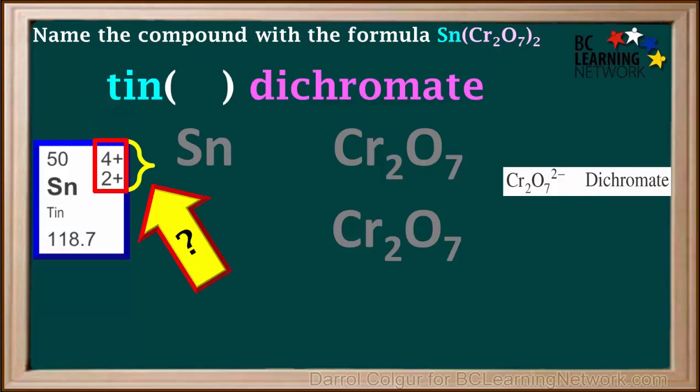Tin is a multivalent metal with a charge of either positive 4 or positive 2. So we need a Roman numeral right after tin in the name. We don't know what Roman numeral to use at this point. We determine that by finding the charge the tin ion needs to have to balance the total negative charge on the dichromate ions.